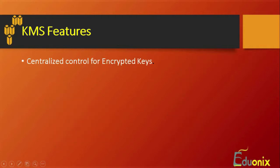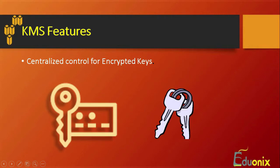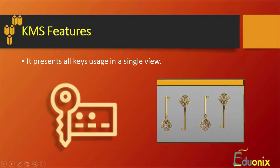KMS provides centralized control for encrypted keys — your encrypted keys are located at a central location in the AWS cloud itself. Every key has a set of two pairs: one is located with Amazon Web Services and you can share the other key with the customer or user. KMS also contains a single view usage, so you can see all the keys aligned in the same console without needing to find keys across different applications or database services.